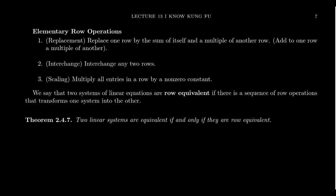These elementary row operations are three operations we can do to an augmented matrix that will change the matrix, and if done strategically, will row-reduce the matrix until we obtain echelon form, and we can continue on to get to row-reduced echelon form, which is our goal. There are three elementary row operations called replacement, interchange, and scaling.